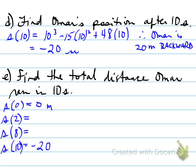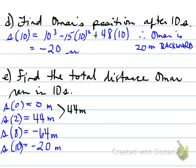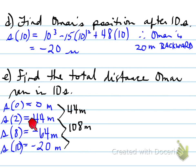Looking at which direction he moved: S at 0 is 0 meters, S at 10 is negative 20 meters. Plugging in S at 2 and S at 8 gives us the different meter values already determined. From 0 to 2, he traveled from 0 to 44 meters — a distance of 44 meters. Then from 44 meters he traveled backwards to negative 64 meters, a total distance of 108 meters.